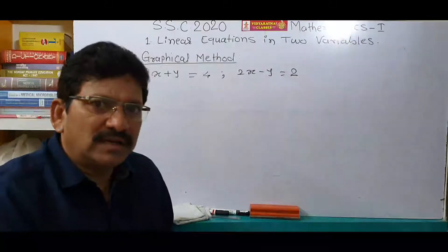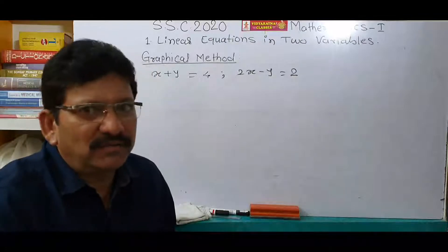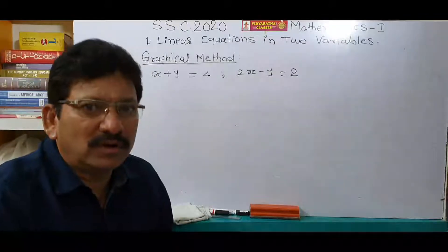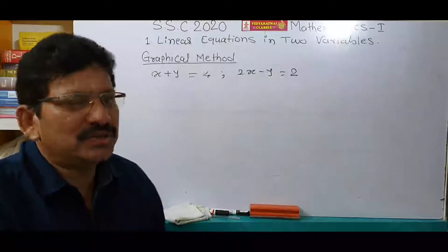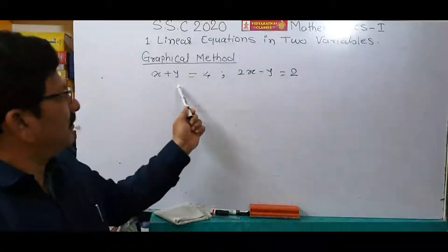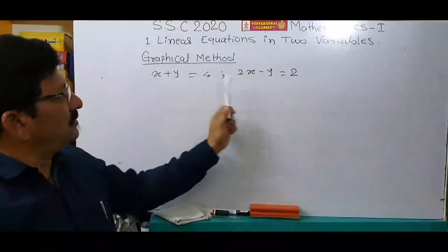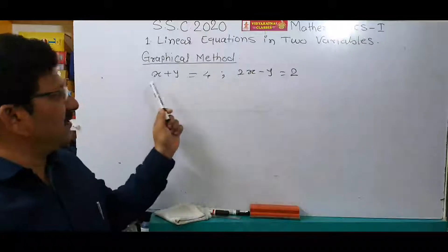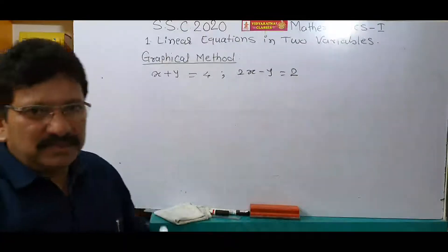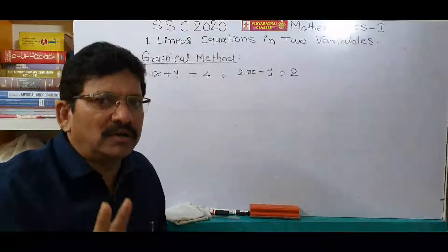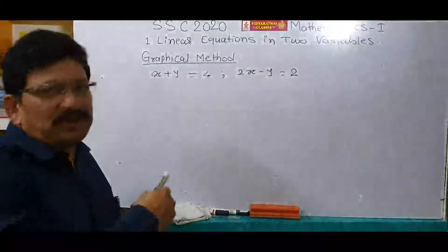To solve by the graphical method, first of all we have to find out 4 ordered pairs of solutions for each equation. We have taken here 2 simultaneous equations, and to solve by the graphical method, we have to find out 4 ordered pairs of solutions for each equation.